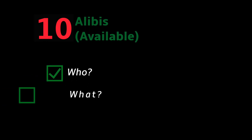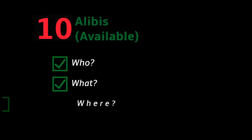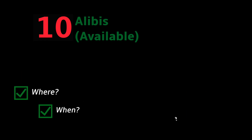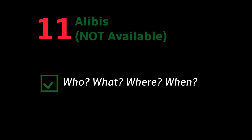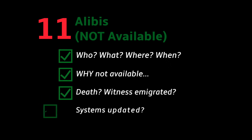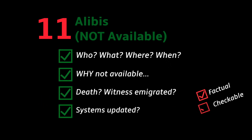Document ten: alibis, if necessary and if they're provable — where you were, what you were doing, and anything relating to an alibi. Document eleven is similar: alibis that you can't provide for whatever reason — who, what, why, where, when — and why you can't provide the information, perhaps because somebody has died or emigrated.